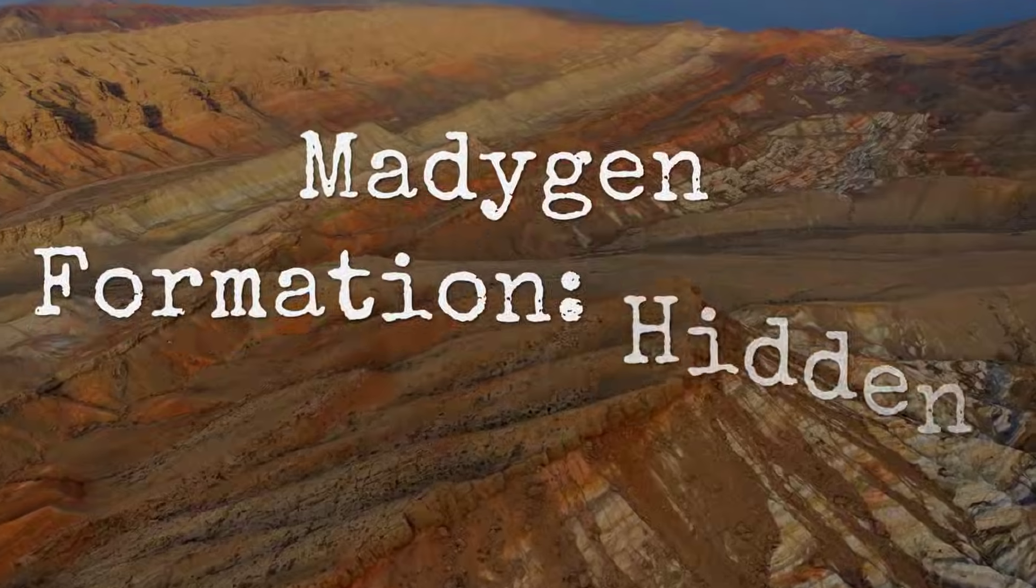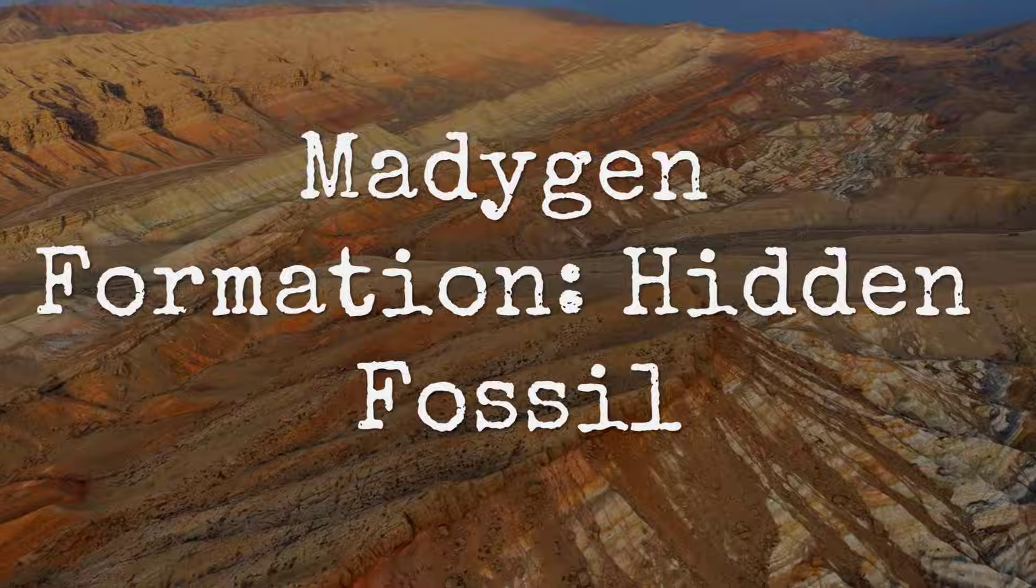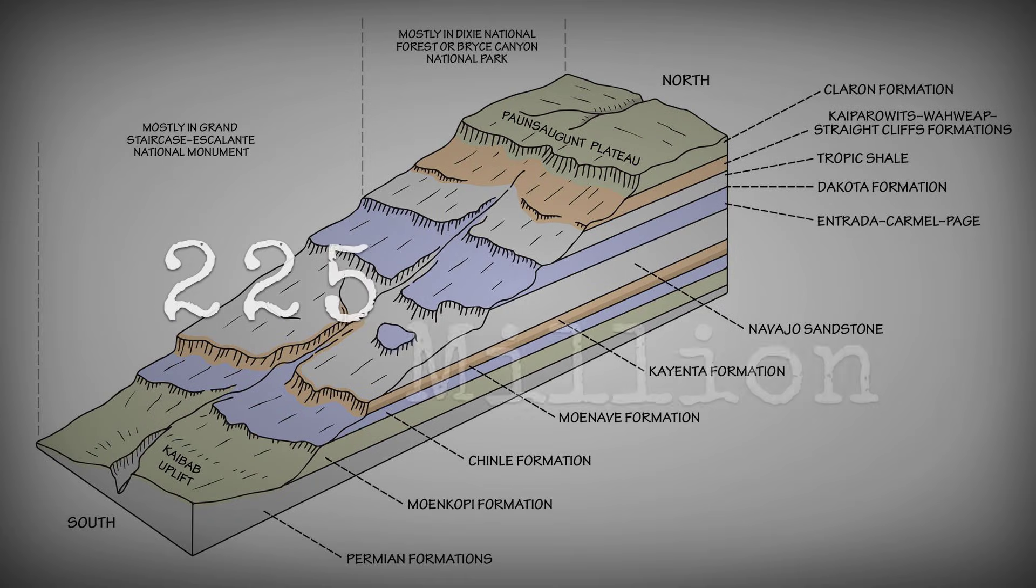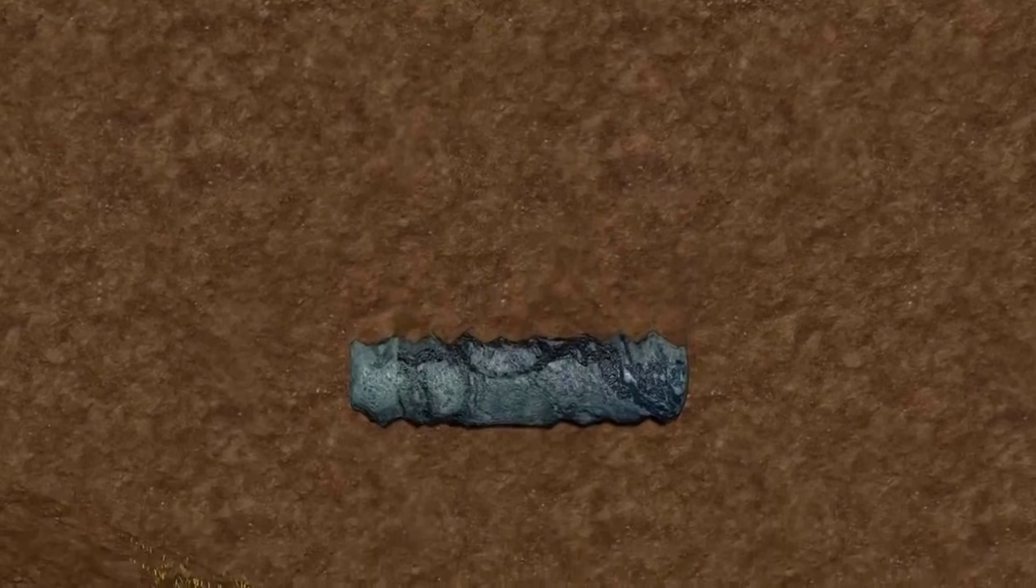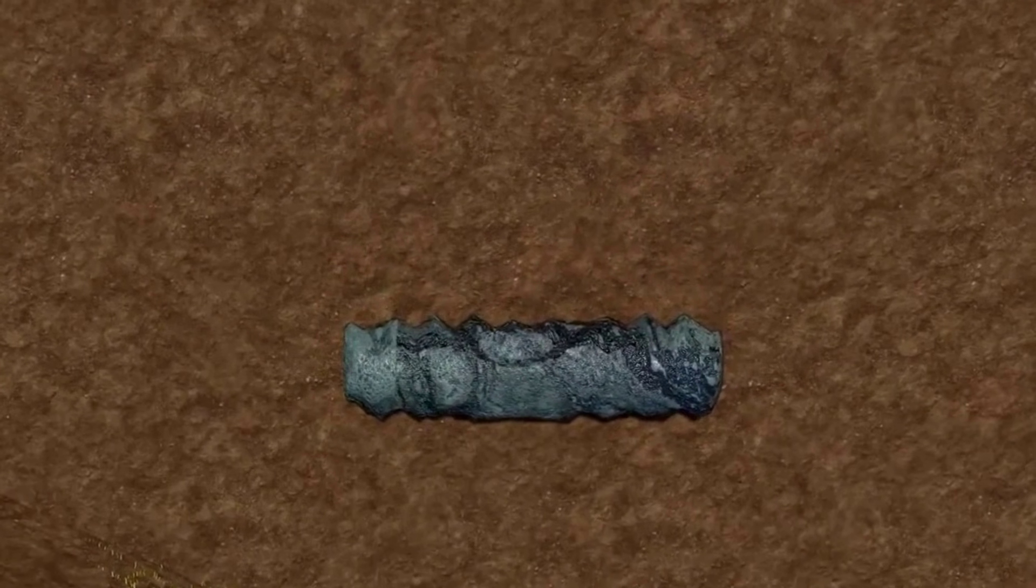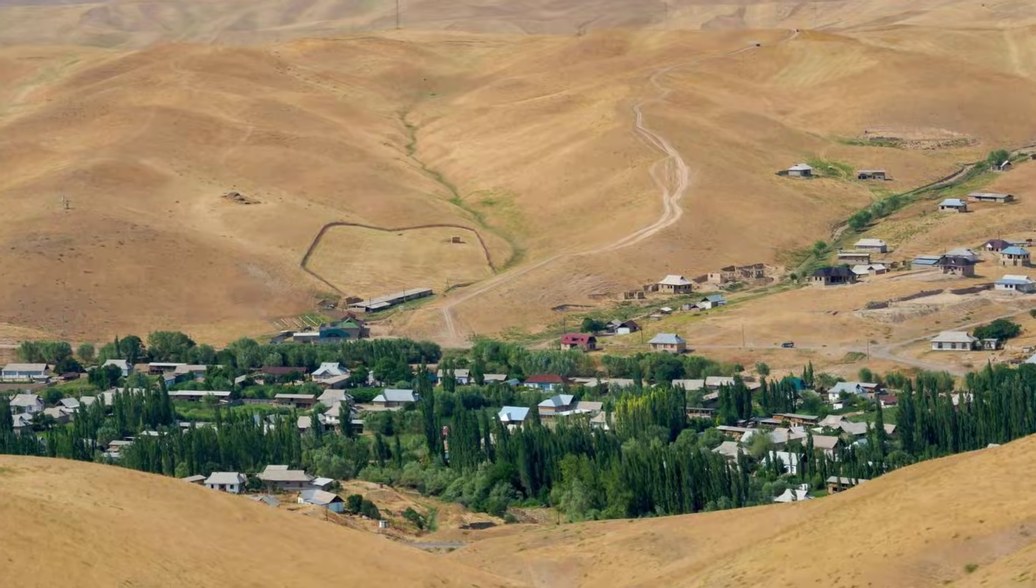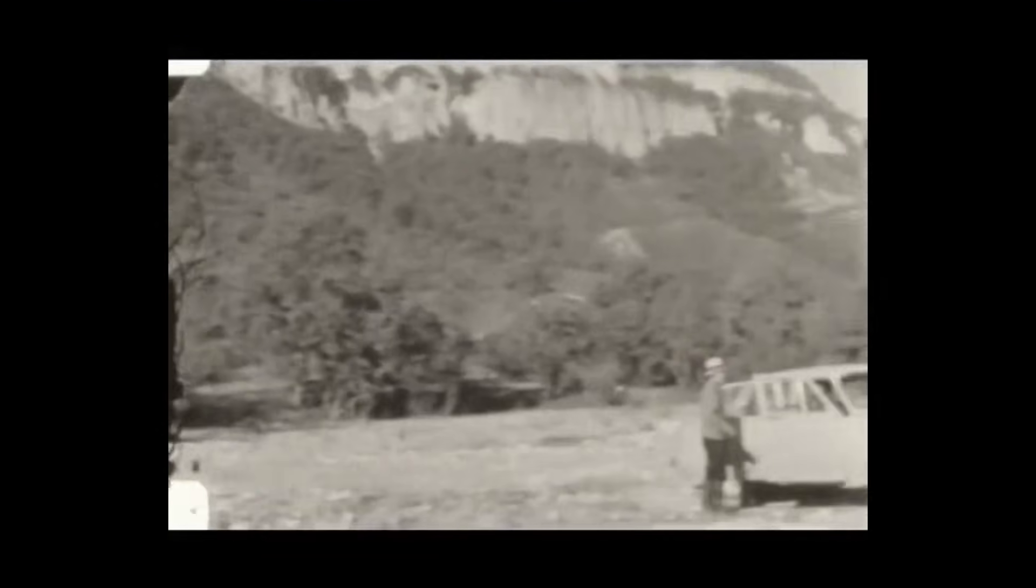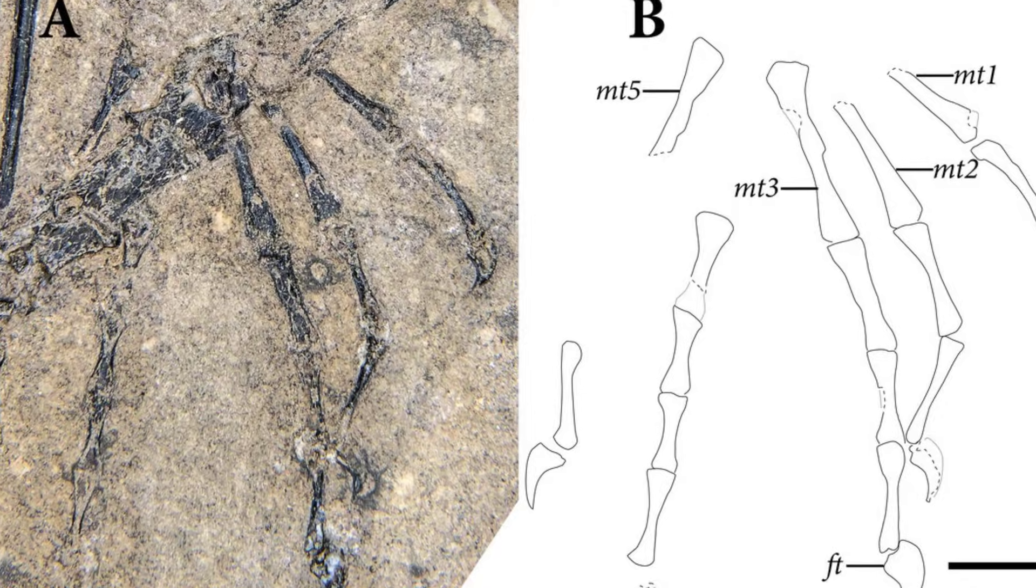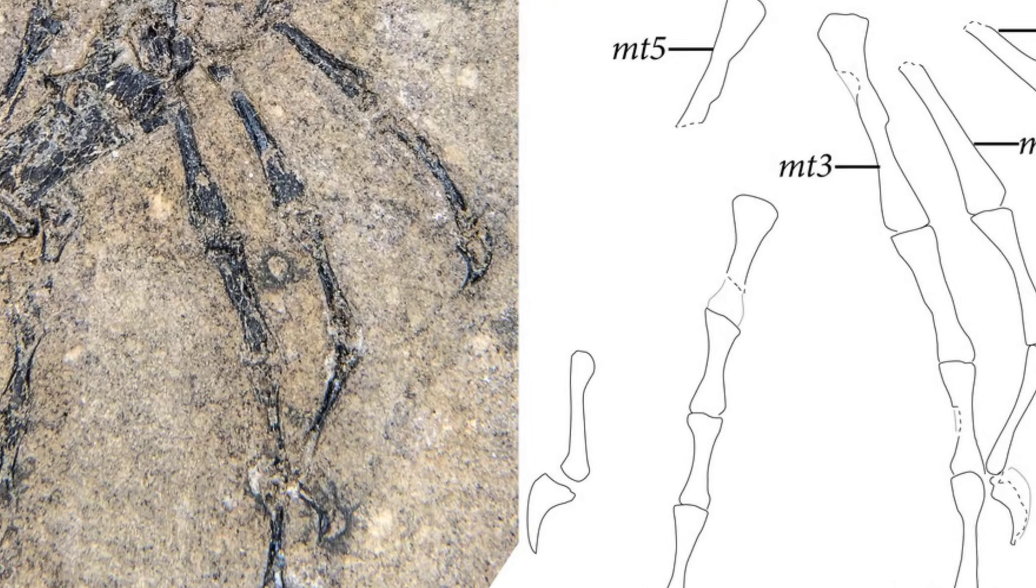The Madogen formation in Kyrgyzstan is a paleontologist's nightmare. 225 million years old, Middle Triassic sediments deposited in an ancient lake bed where creatures fell, died, and were preserved in fine-grained stone. The site is remote, on the southwest edge of the Fergana Valley. Soviet expeditions in the 1960s were mapping fossil beds when they found it. A single slab of rock, maybe 30 centimeters long.